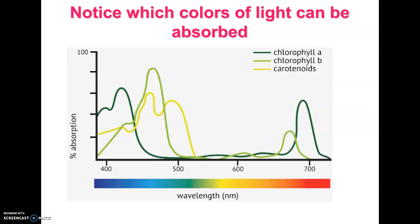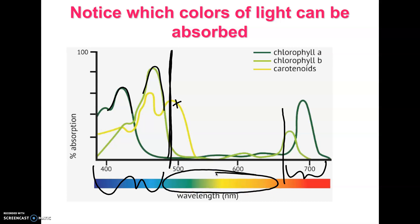So if you look here, remember carotenoids are accessory pigments. So this light yellow line, and we're going to kind of ignore it. Chlorophyll A and chlorophyll B, here are your chlorophylls. And notice they absorb really well this area, and they absorb this area, but notice that they don't absorb anything in here.